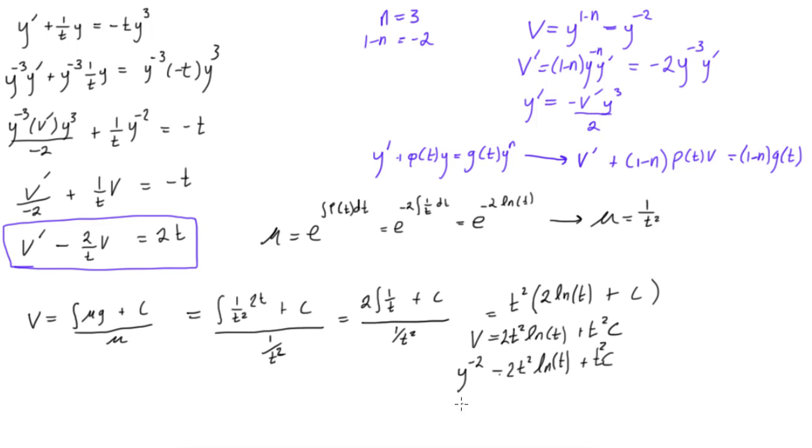So we can rewrite this equation as y is equal to, just using simple cross multiplication, is 1 over 2t squared ln of t plus t squared times c, that arbitrary constant.